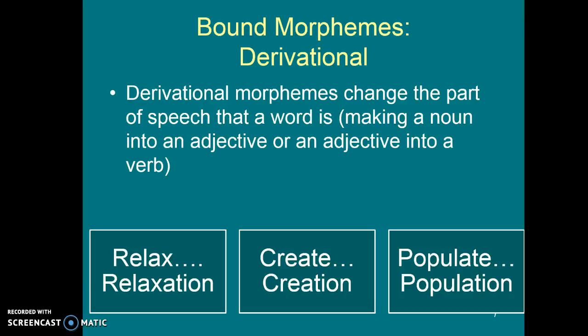Bound morphemes come in two types. Derivational morphemes change the part of speech. So if you have a verb like 'relax,' you can add the ending '-tion' or '-ation,' and that will change the verb into a noun. Relax becomes relaxation, create becomes creation, and populate becomes population. By adding '-tion' or '-ation' at the end of a word, you change it from a verb to a noun — that's a derivational morpheme, it changes the part of speech.